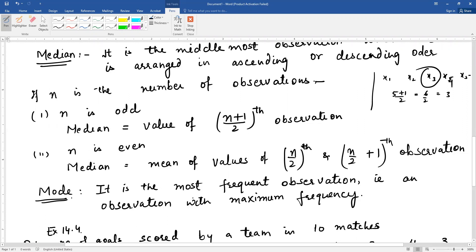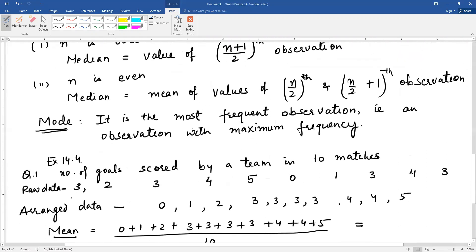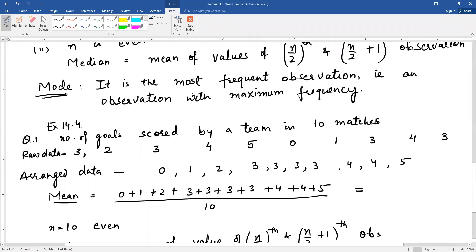Let's take an example. Your exercise 14.4, first question. Number of goals scored by a team in 10 matches. Given data is: 3, 2, 3, 4, 5, 0, 1, 3, 4, 3. This is your raw data. This is not arranged in any order. Now first we arrange this in increasing order.